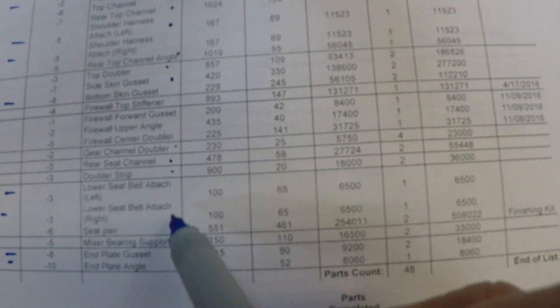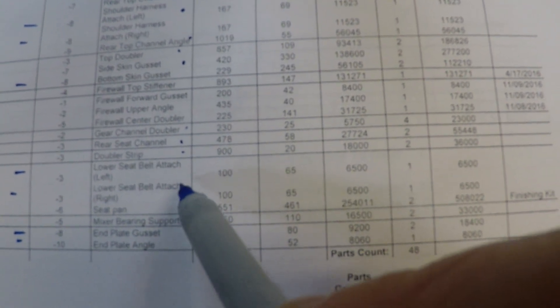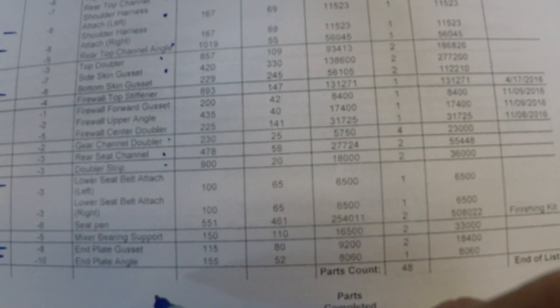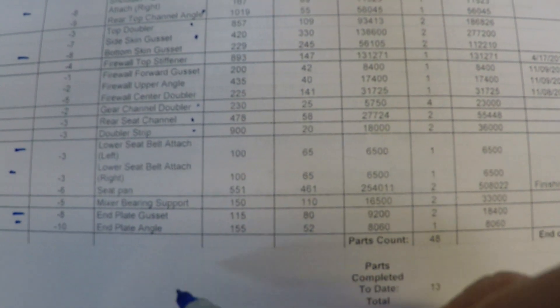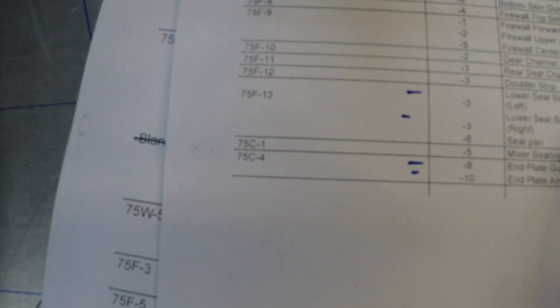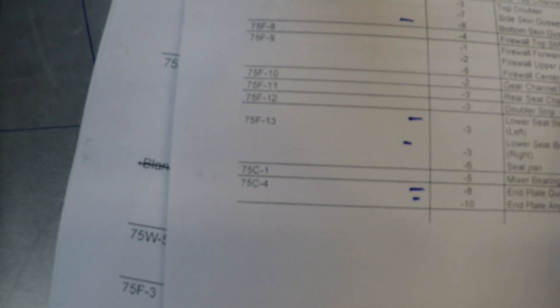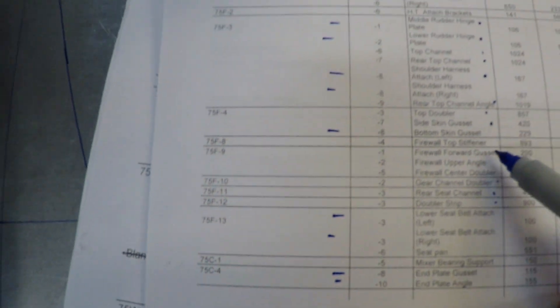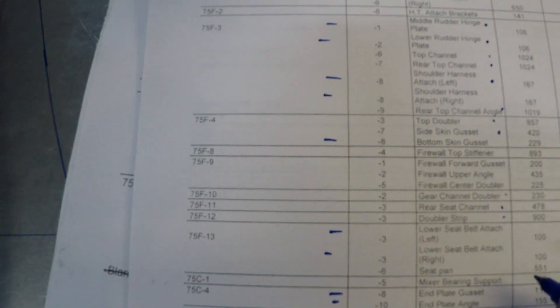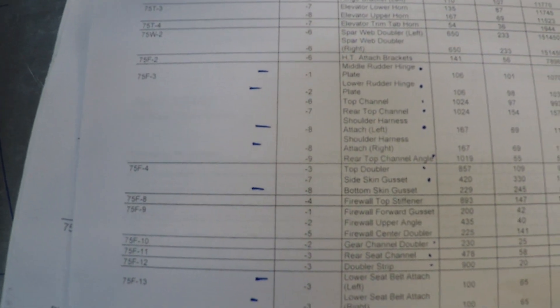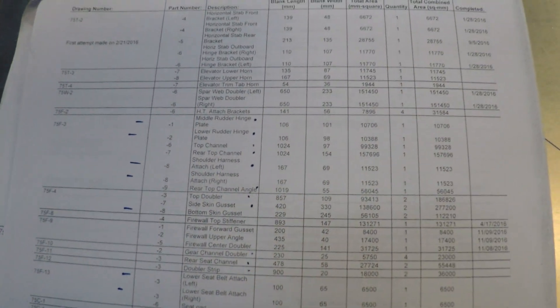And then all I've got left in this thickness are the lower seat belt attachments, the mixer bearing support, the end plate gussets, and the end plate angle for the controls. So one, two, three, four, five, six, seven, nine more parts to make in this thickness. I've got the bottom skin gussets to do and those are pretty small. So only nine more parts to lay out in this thickness and then cut out and finish.